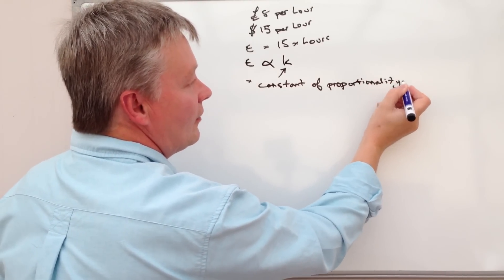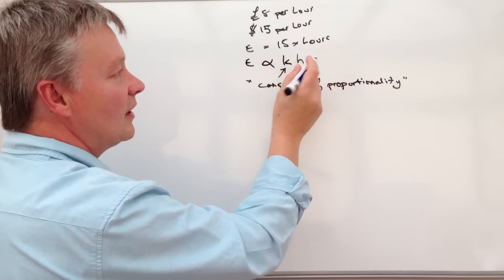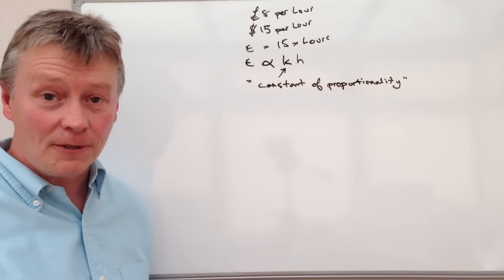And that would be E is proportional to K, in this particular case, times H.